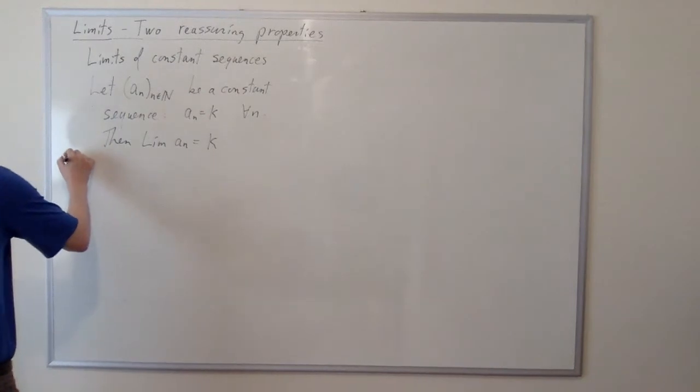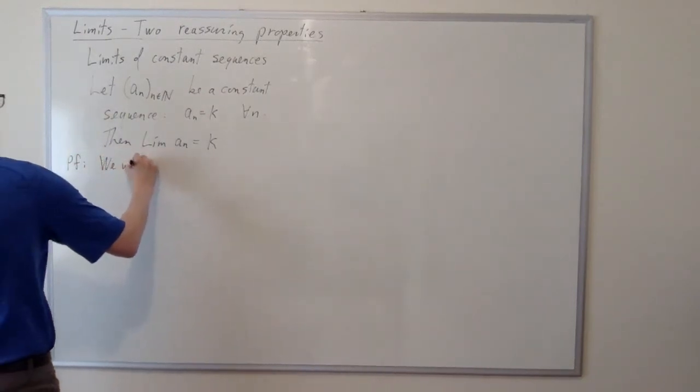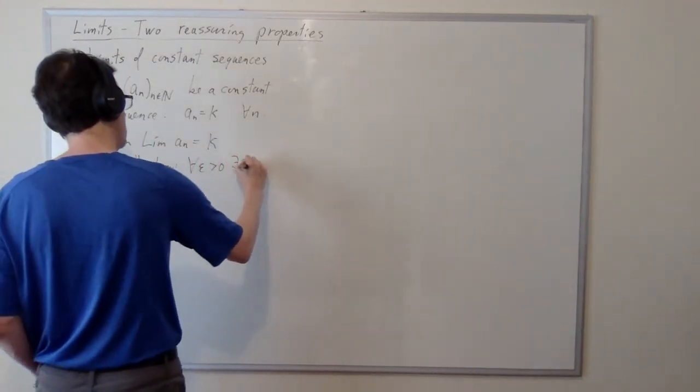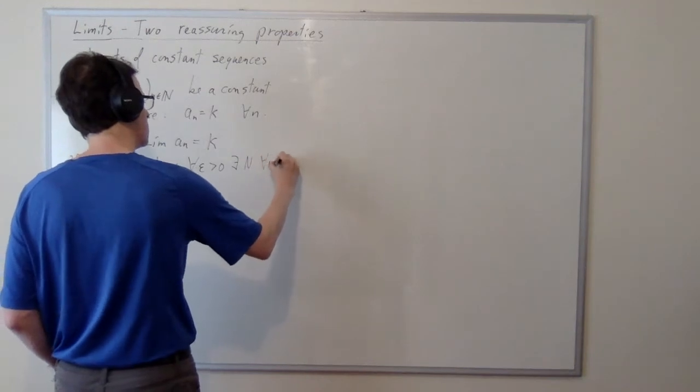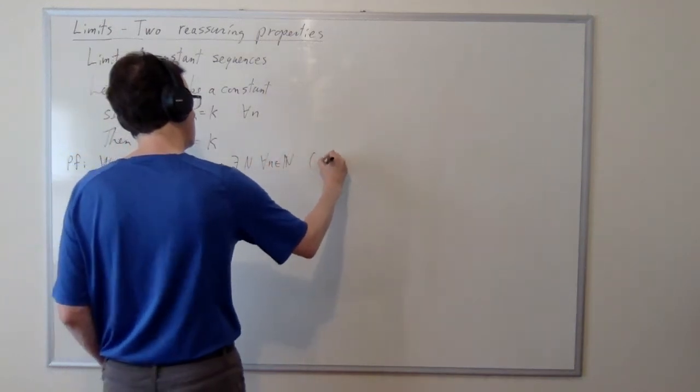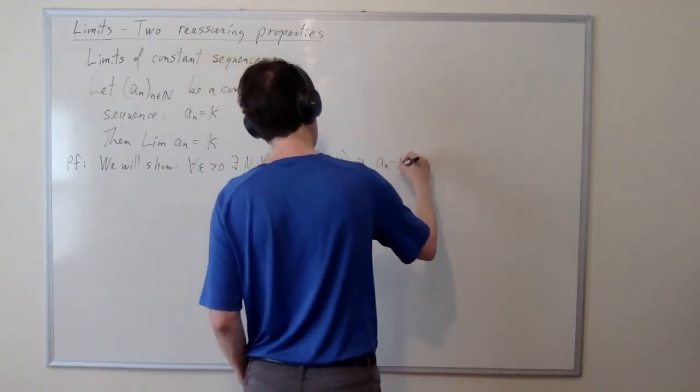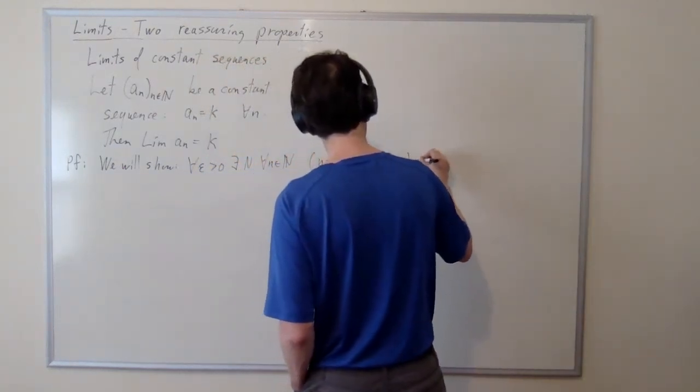So to prove, so proof. So we will show. What does it mean to show this? It means to show for every positive epsilon, there exists a cap N such that for every natural number n, if n is greater than cap N, then |a_n - k| is less than epsilon.